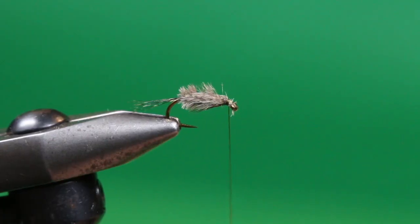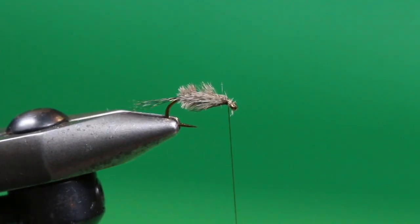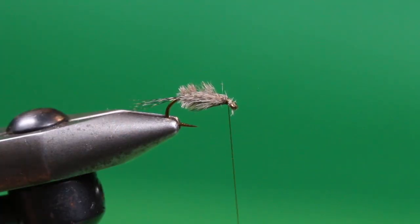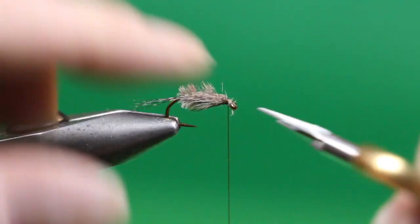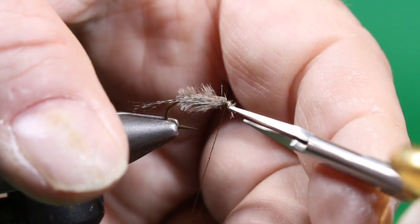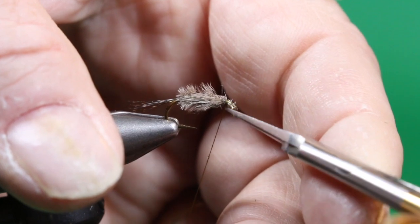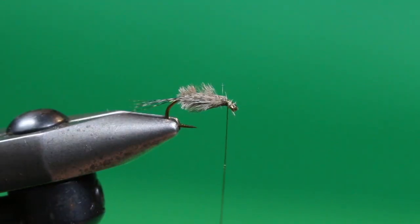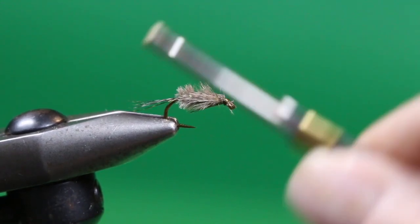Being careful, obviously, not to trim the thread. We'll spin the bobbin counterclockwise. That'll flatten our wraps and help cover up those little errant fibers that are sticking up. Got a little bit of ostrich hurl from that tie off, so I'm just going to be careful not to accidentally trim my thread. We're just going to build up a little neat, dark head here.